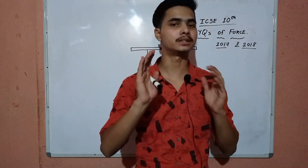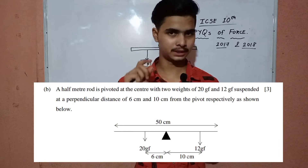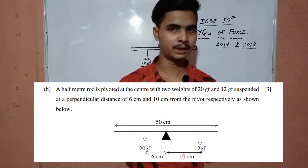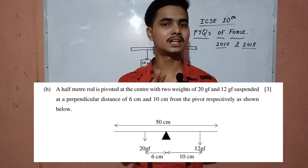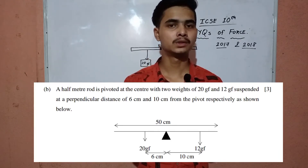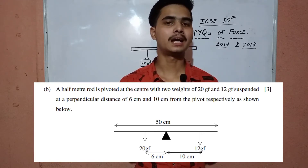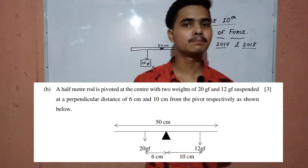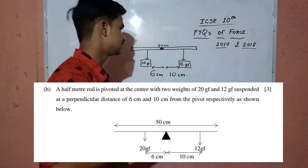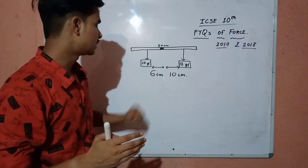Here is the 2018 question. It says there is a half meter rule pivoted at its midpoint. There are two forces — 20 gram force and 12 gram force — placed respectively at 6 centimeters and 10 centimeters from the pivoted point. The diagram is given and this is the required diagram.